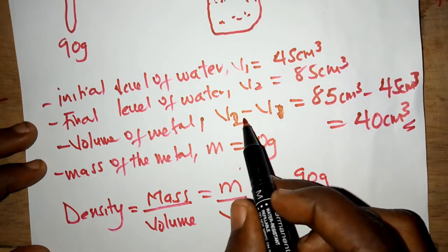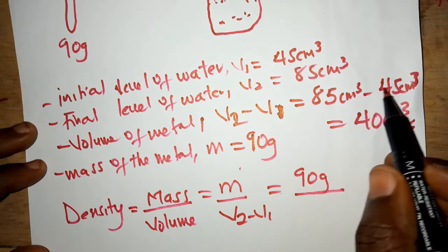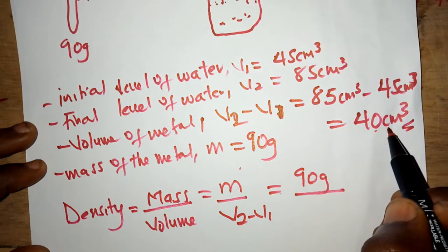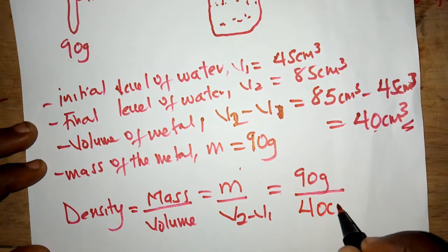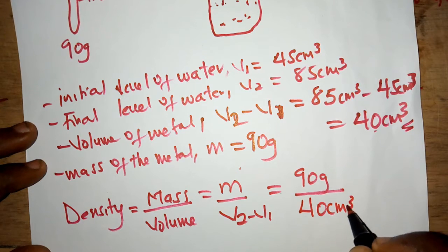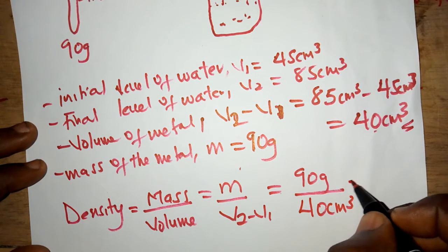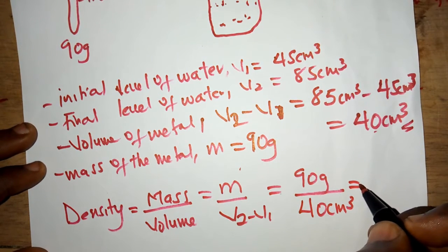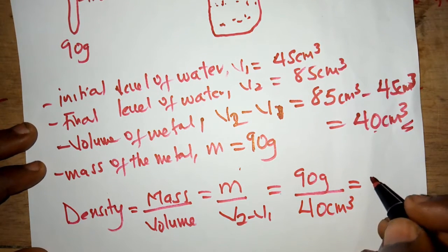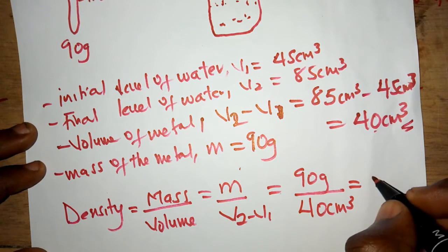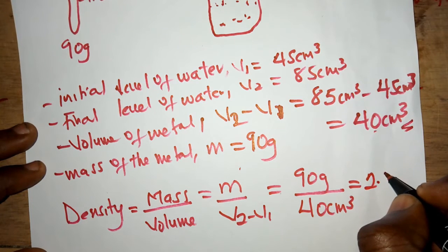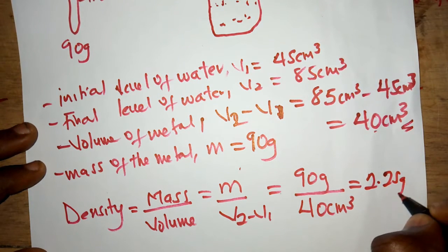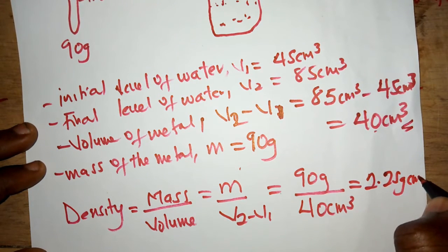So 90 grams divided by 40 centimeter cube equals 2.25 grams per centimeter cube.